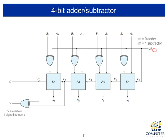Suppose M is 0. Then one input of the XOR gates is 0, and B passes directly through the exclusive OR gate. Recall the property of exclusive OR: any value XOR'd with 0 remains unchanged — 0 XOR 0 is 0, and 1 XOR 0 is 1. So when M is 0, the full adders simply add A and B, and the S output produces the addition result. The C output produces the carry.